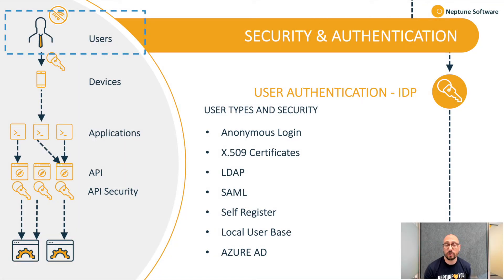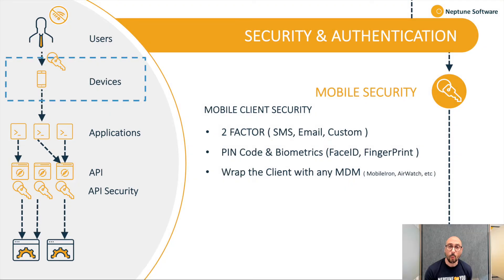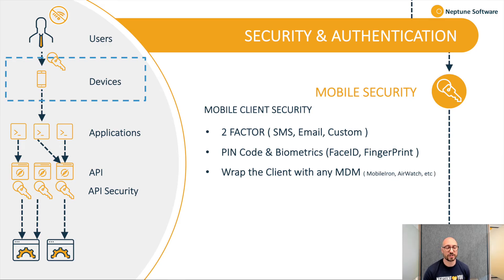This will guarantee you a separation between database, API management, and front-end. How do we manage security on three different levels? Let's start with the users. The users can use your own identity provider service. For example, we can use LDAP SAML, Azure AD, JSON Web Tokens, or X509 certificates.